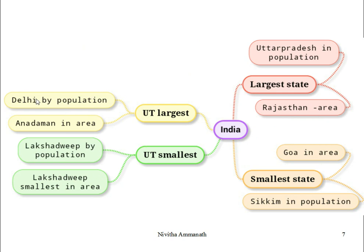Largest and smallest union territories: the largest union territory by population is Delhi, and the largest by area is the Andaman and Nicobar Islands. The smallest union territory by both population and area is Lakshadweep. For states, the largest state by population is Uttar Pradesh, and the largest by area is Rajasthan. The smallest state by area is Goa, and the smallest by population is Sikkim.